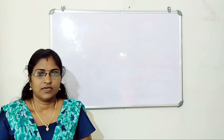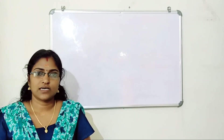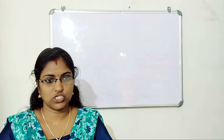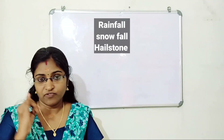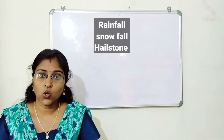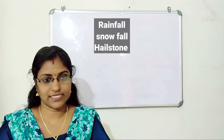There are three forms of precipitation: rain, snow, and hailstorm.